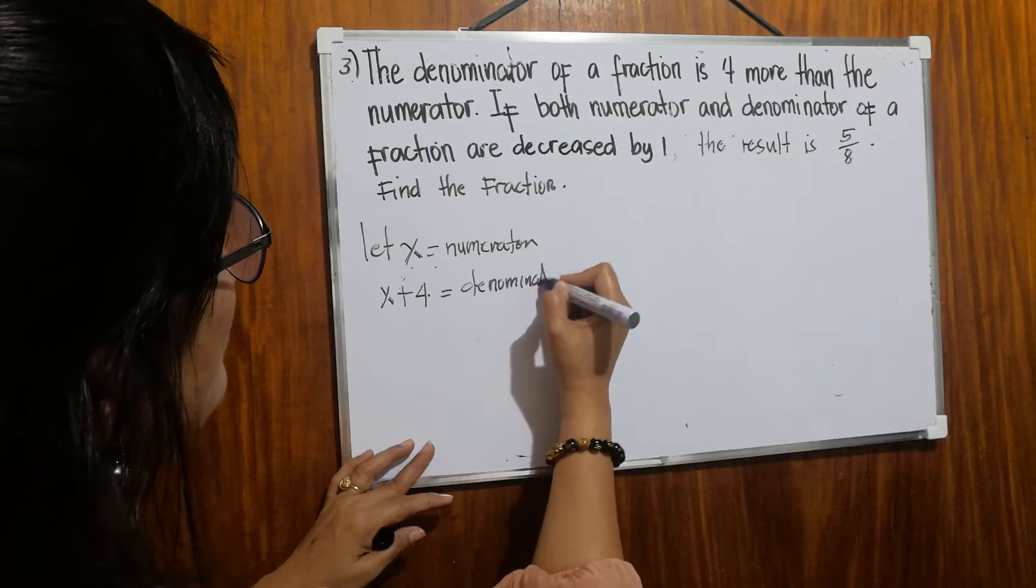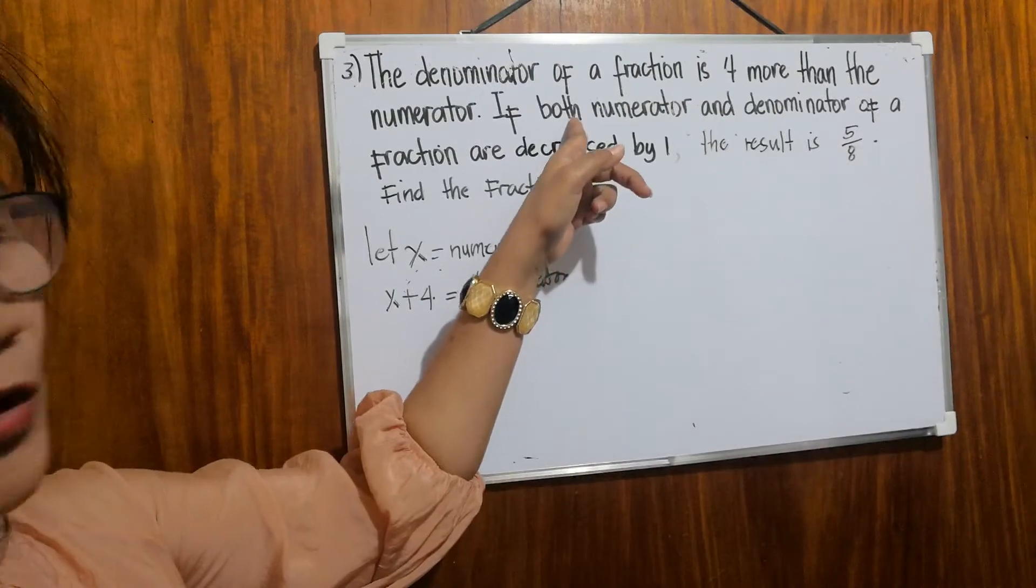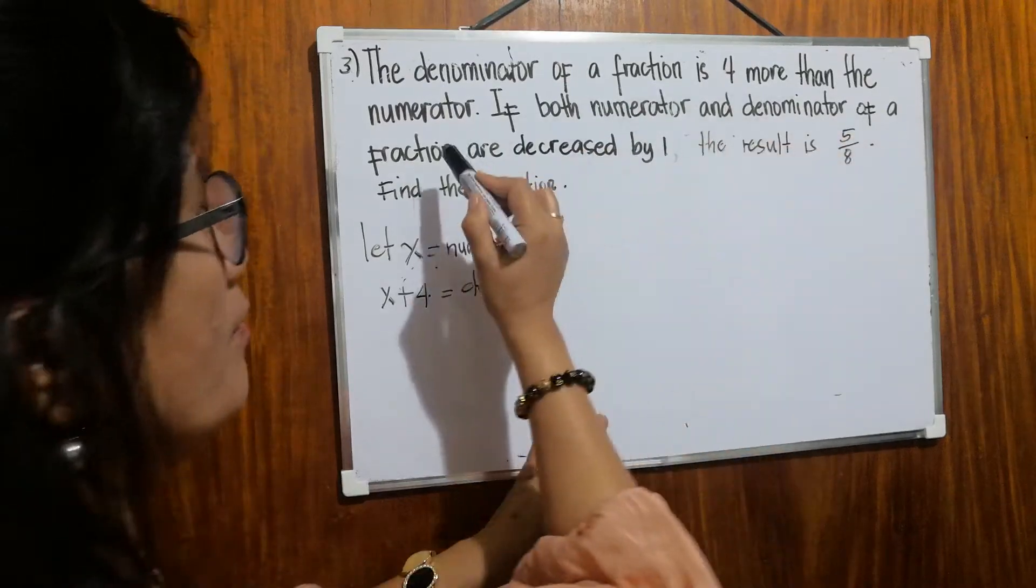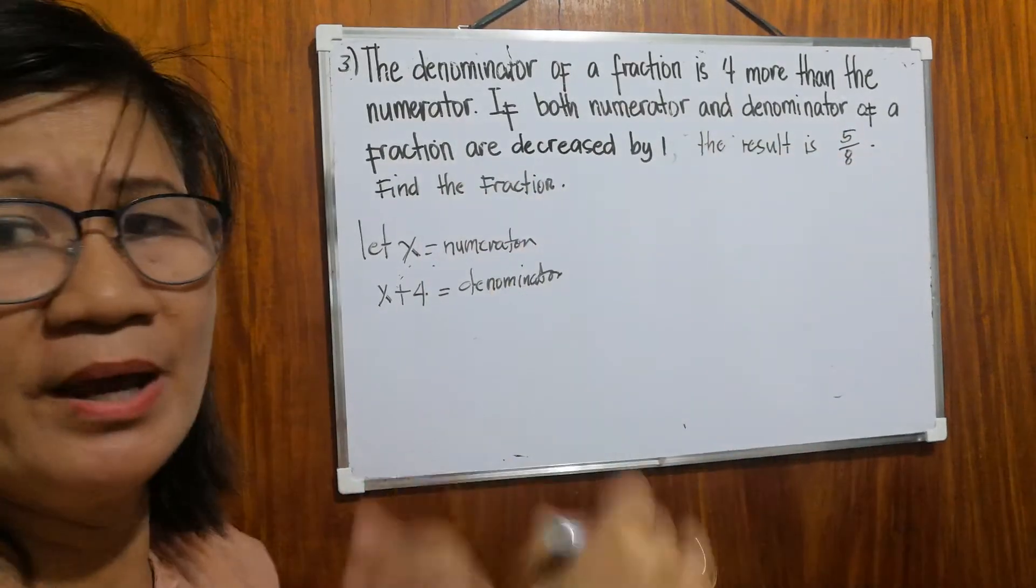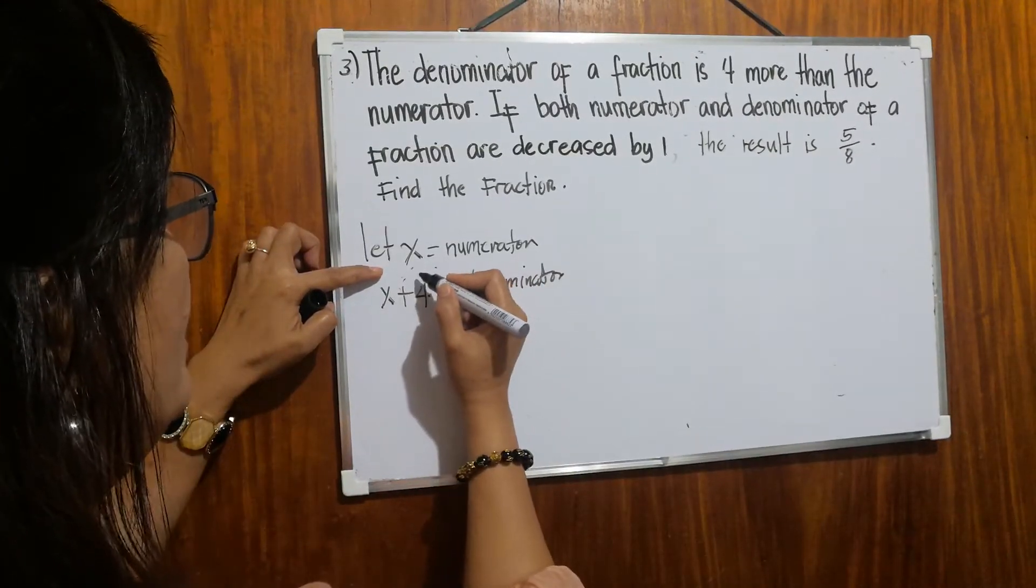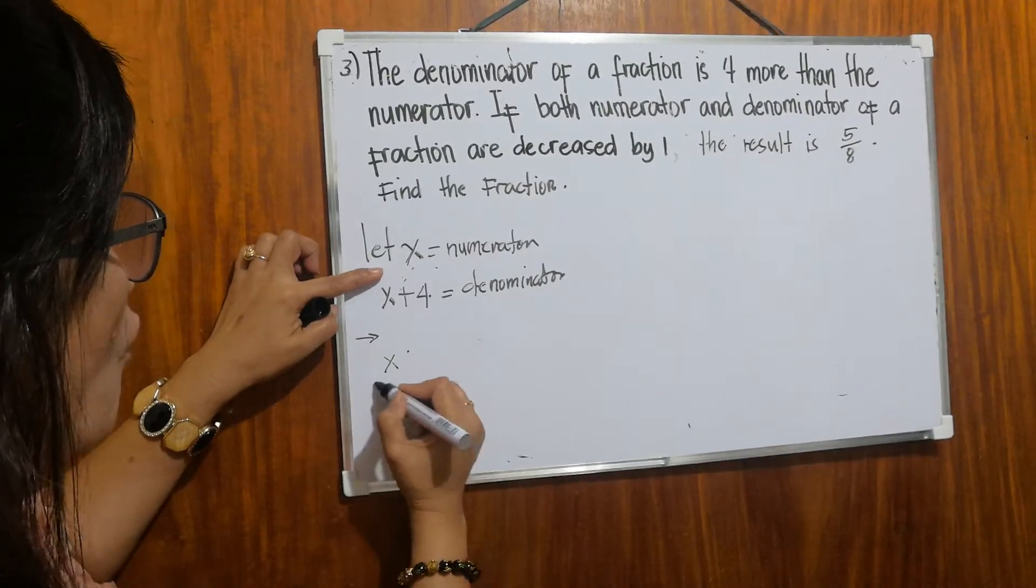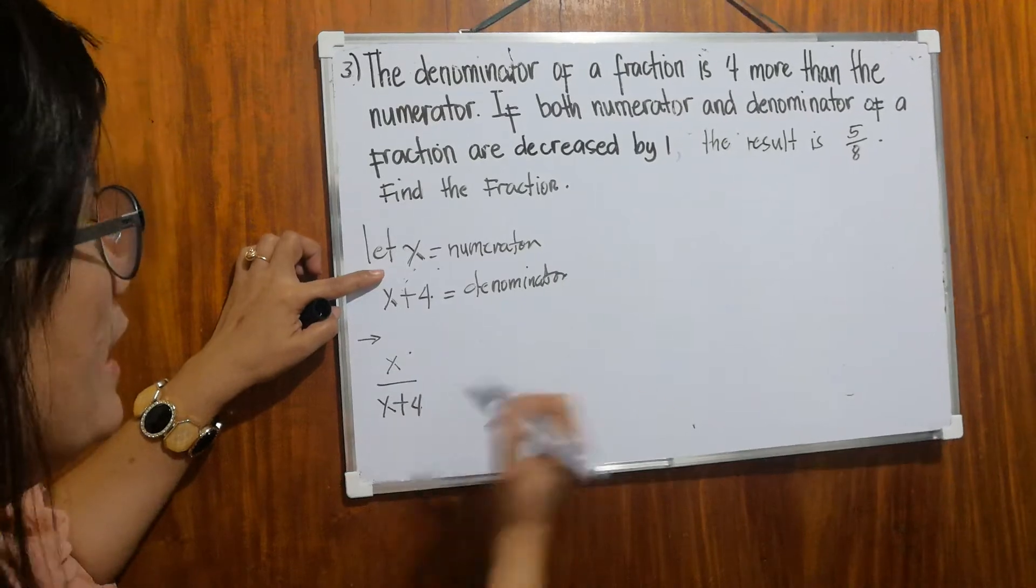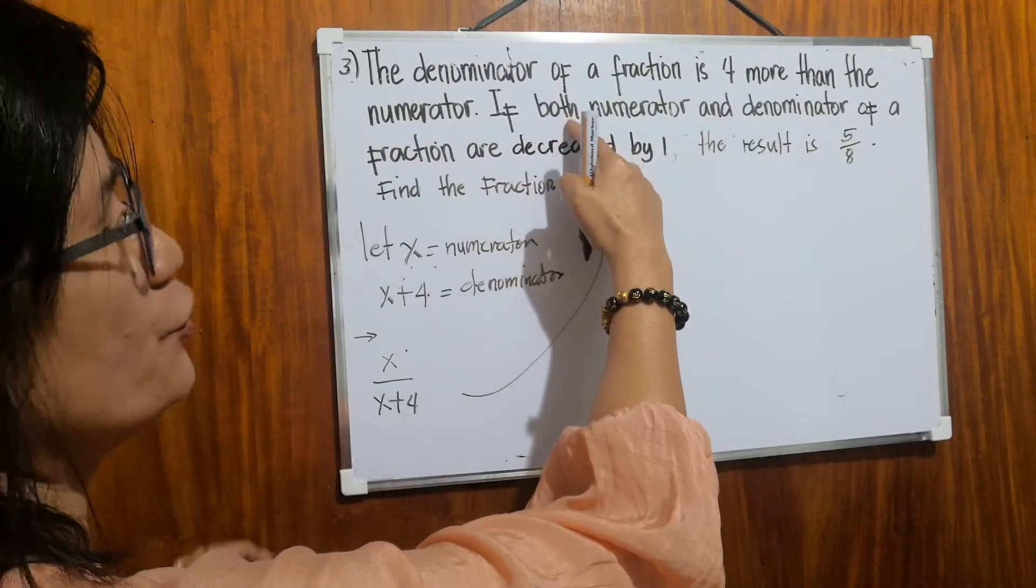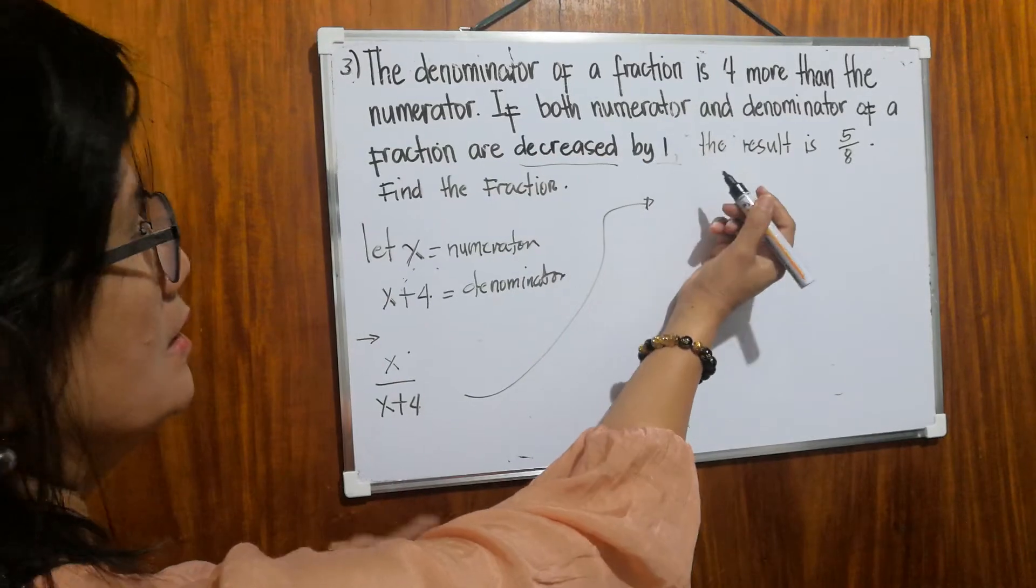Then there's a second condition stated. If both, if both, meaning both of them. If both the numerator and denominator of a fraction are decreased by one. Decreased by one. So what happens, this is the numerator, the translation will be x over x plus four. However, we have a new condition, it says if both numerator and denominator of a fraction are decreased by one.